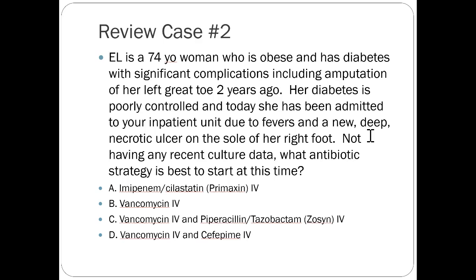Choice C is vancomycin plus piperacillin-tazobactam — this is the correct option. It covers gram-negatives, gram-positives including MRSA with vancomycin, and also picks up anaerobes. Choice D might seem good, but cefepime doesn't have great anaerobic coverage, so bacteroides in a deep ulceration won't be covered. That's why Zosyn has the advantage. If you added metronidazole to cefepime that would also be acceptable, but the question only gave you cefepime.